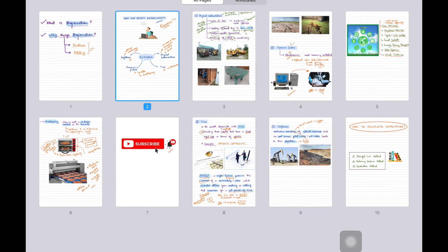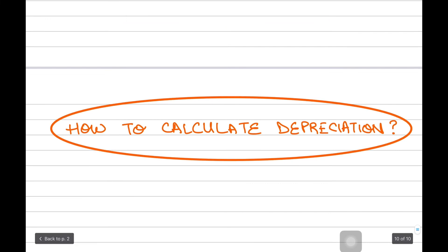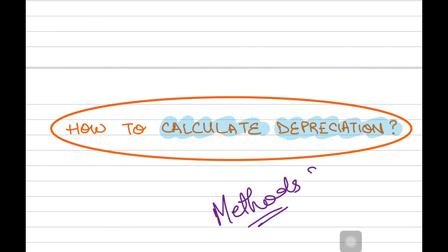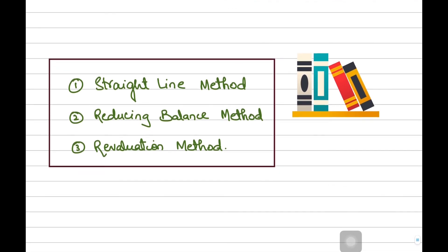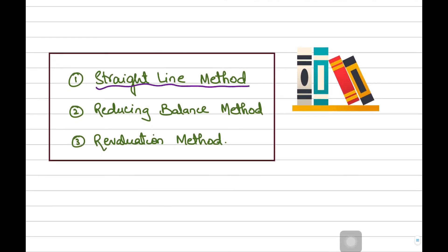Now you might be wondering what the next step is. Since assets are depreciating, what do we do next — that is, how do we calculate depreciation? What are the methods to calculate depreciation? Basically, there are three methods which we will be learning about in future videos: straight line method, reducing balance method, and revaluation method of depreciation. In the next video, we will be learning about our first method, the straight line method of depreciation. So that's it for this video — see you in the next one. Don't forget to subscribe to T-Accounts. Take care.